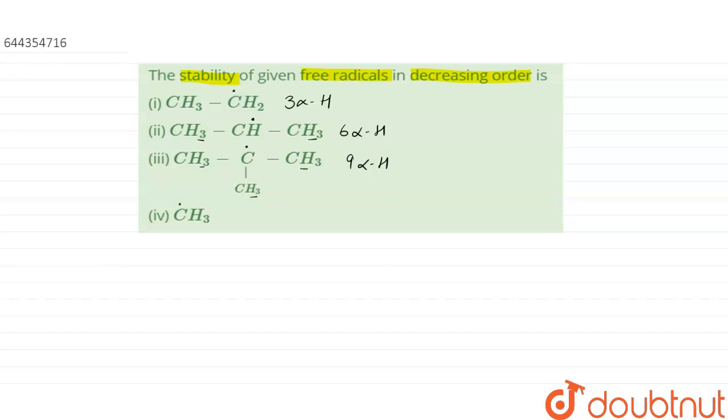The fourth one has no alpha hydrogens attached to it. So that means the stability of the third one is the maximum, that is option number three, then option number two, then option number one, and the last one, option number four, is the least stable free radical. This was one way.